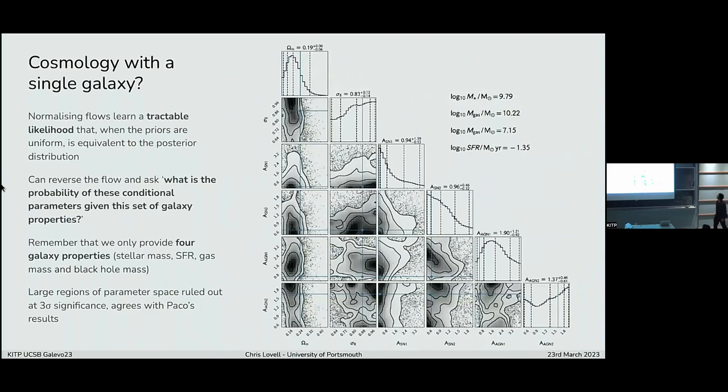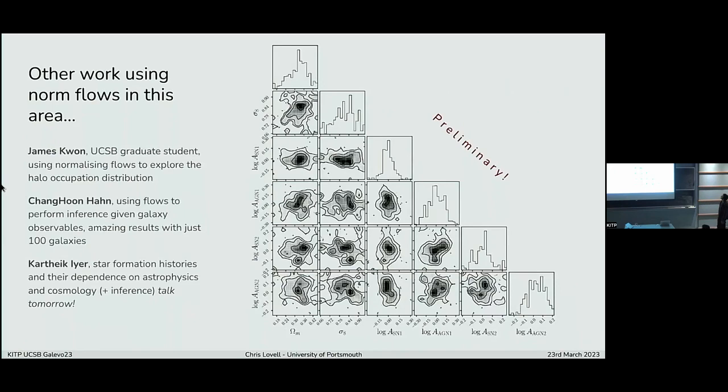Finally, what we can do with this normalizing flow framework is we can invert it and say, given a set of galaxy parameters, what is the actual probability for a given set of input conditional parameters? We're essentially doing cosmology with a single galaxy here. So reproducing what Paco showed yesterday. At the moment, the difference is we're only using four properties. Stellar mass, SFR, gas mass, and black hole mass. But when we do this and run an inference, run this MCMC, we get out posteriors that look okay. It's not fantastic. This is still work in progress, so you have to do this for multiple galaxies simultaneously. But essentially, what we're able to do is, kind of surprisingly, from a single galaxy, four properties, rule out huge regions of parameter space here at three sigma significance. From a single galaxy, we can say with confidence that omega M is less than 0.3, which I think is kind of neat.